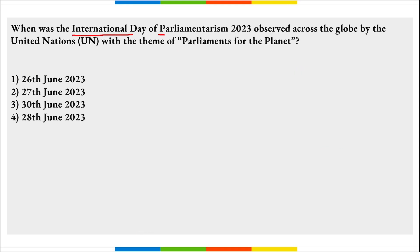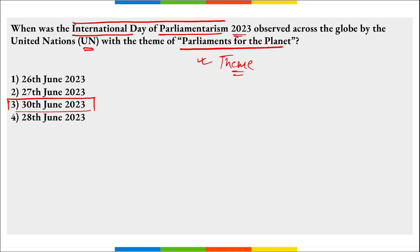When was International Day of Parliamentarism 2023 observed? It is observed on 30th of June with the theme 'Parliaments for the Planet.' The day marks the anniversary of the founding of the Inter-Parliamentary Union, the global organization of national parliaments, founded on 30th June 1889. In 2023, it was the 134th anniversary of IPU.